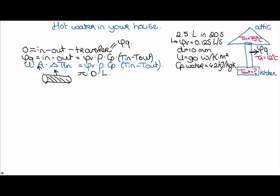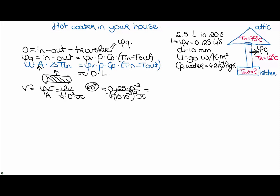How can we calculate the length? We can calculate the flow velocity, which is the flow divided by the surface area — π/4 times D squared. If we fill this in with the right dimensions, we find a flow velocity of 1.59 meters per second. We know that the water takes 20 seconds to flow from the attic to the kitchen, so the length is velocity times time: 1.59 times 20 seconds equals 31.8 meters. So this is the length of the pipeline.